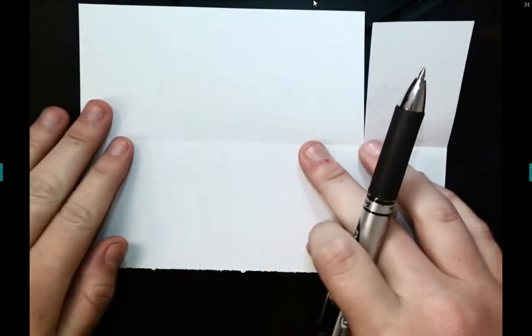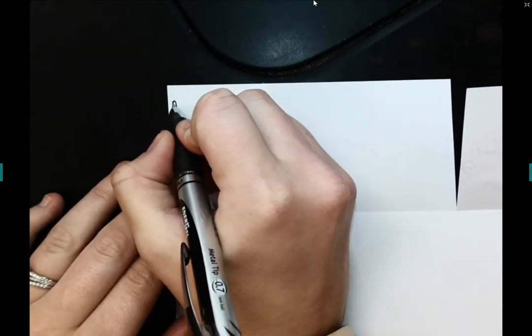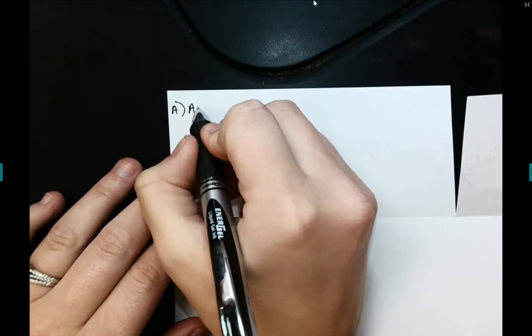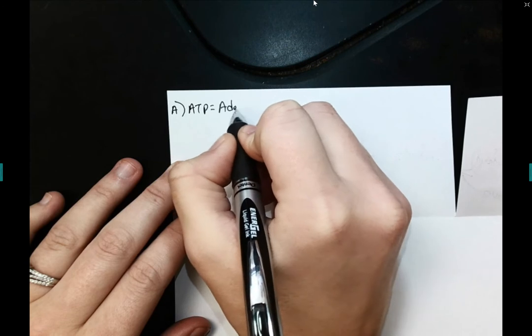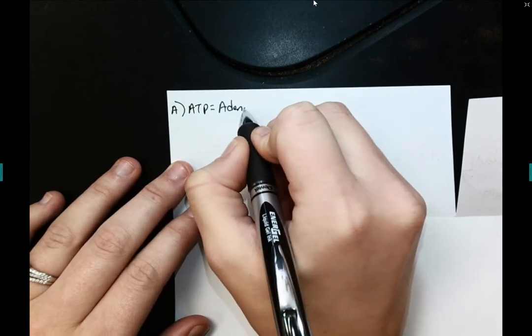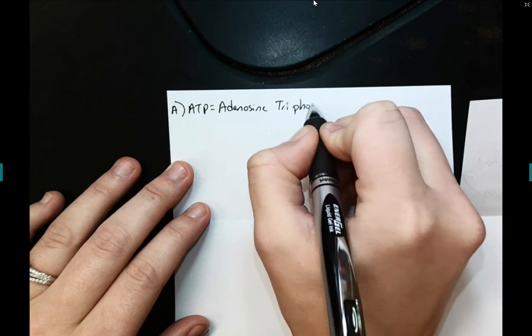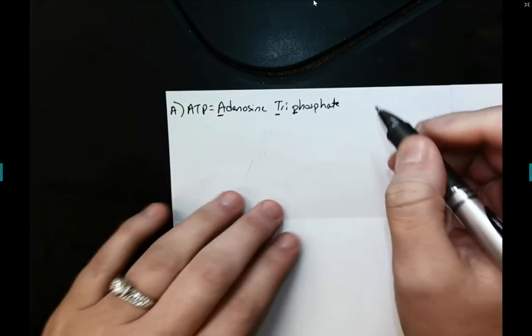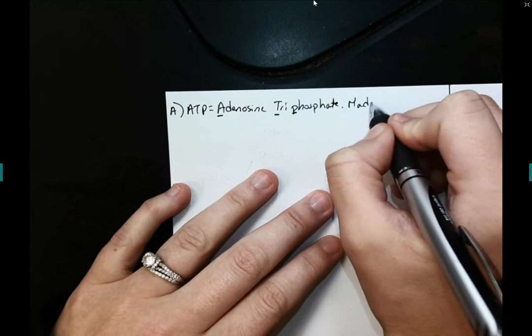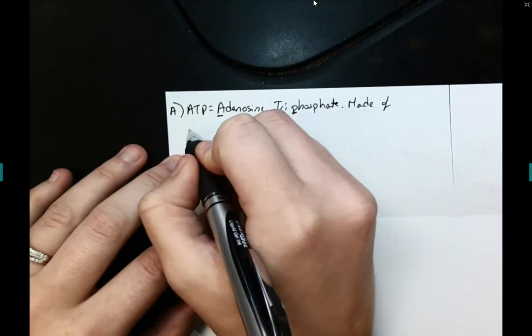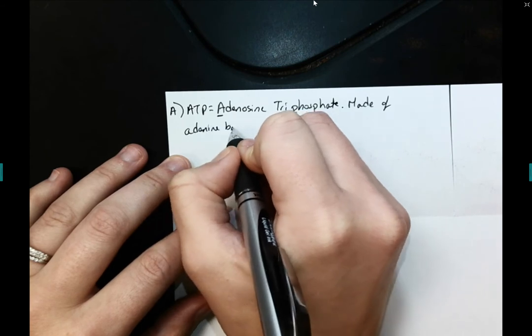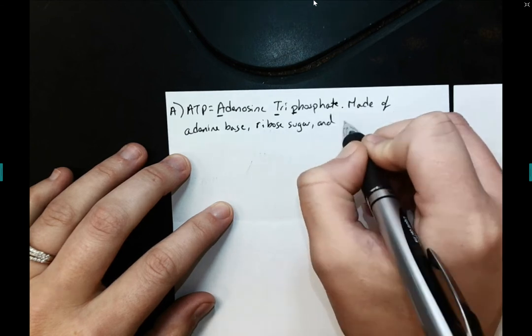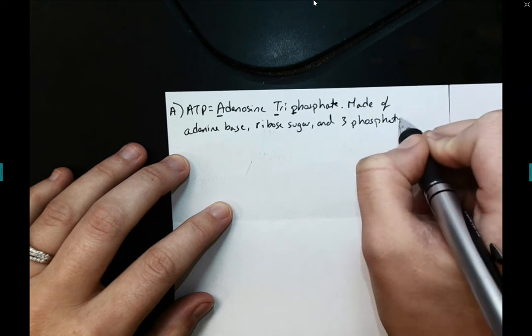I'm going to open up my foldable. So inside, I'm going to take a few notes, things that I need to know. The first thing is that ATP stands for adenosine triphosphate. A-T-P. Adenosine triphosphate. And it is made of the adenosine base, a ribose sugar, and three phosphates.